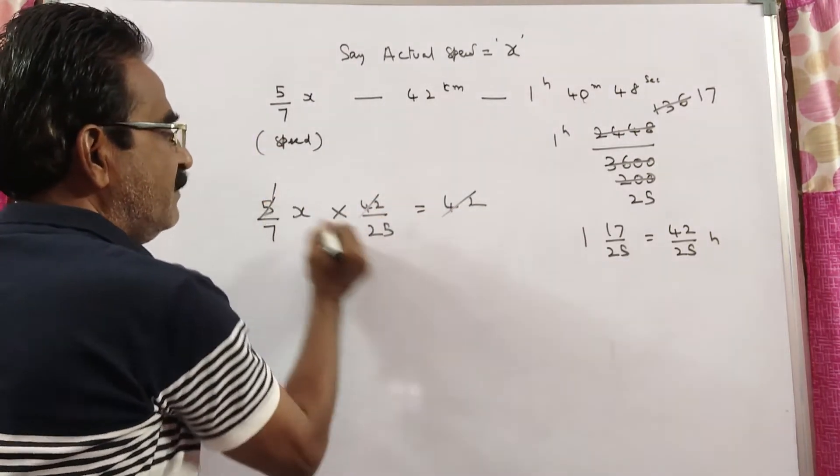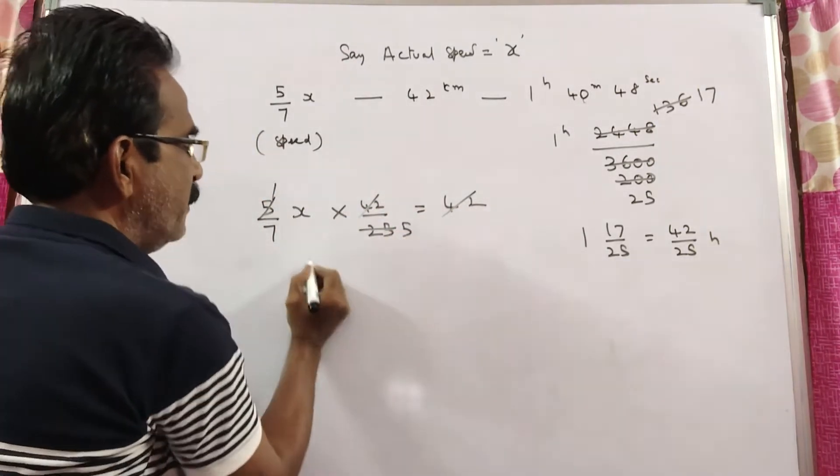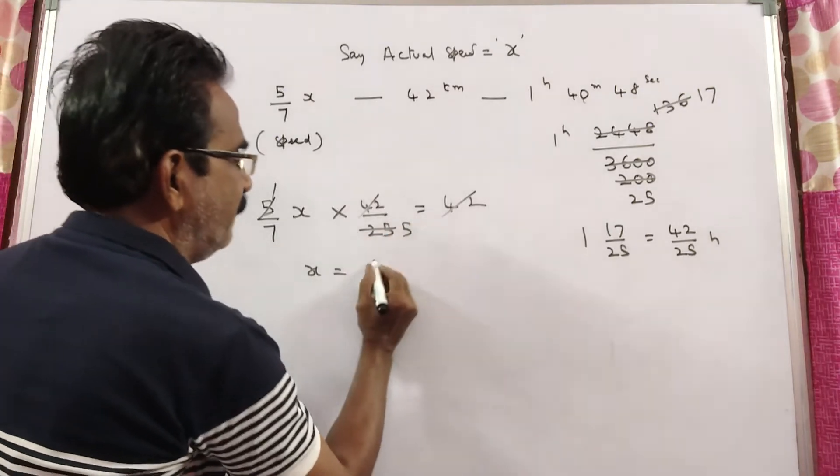42 cancels out, 5 cancels. So x equals 7 times 5, which is 35 kmph.